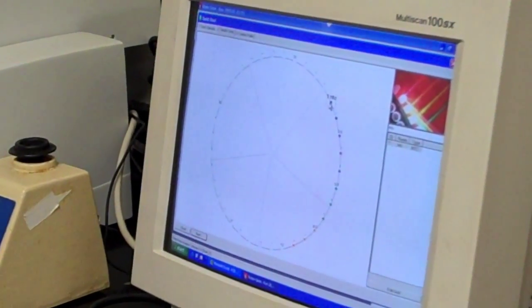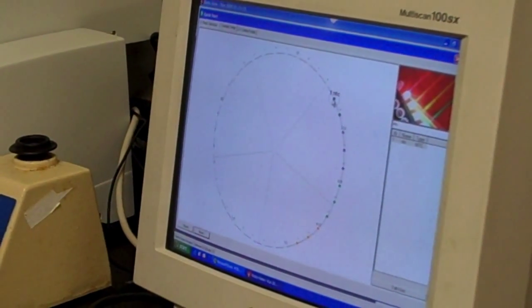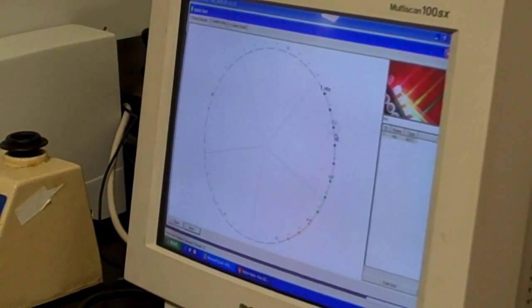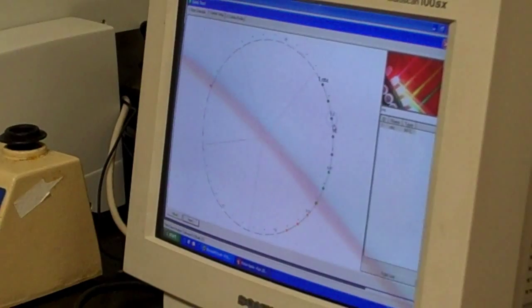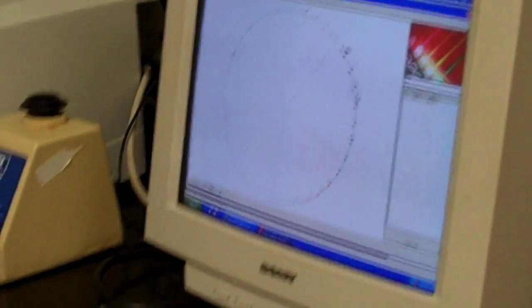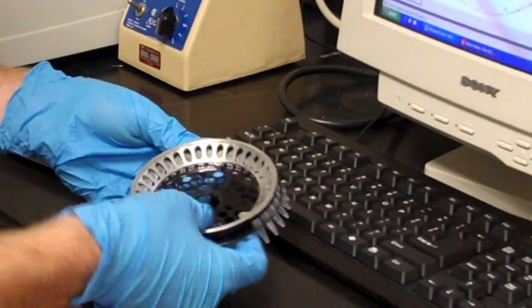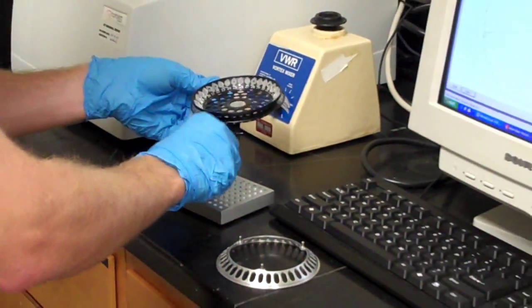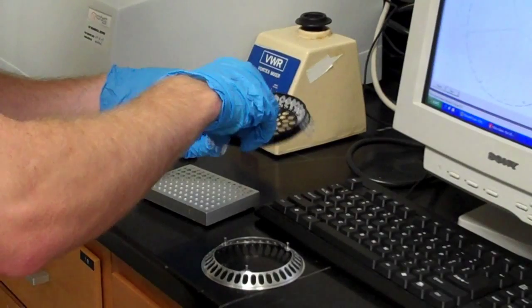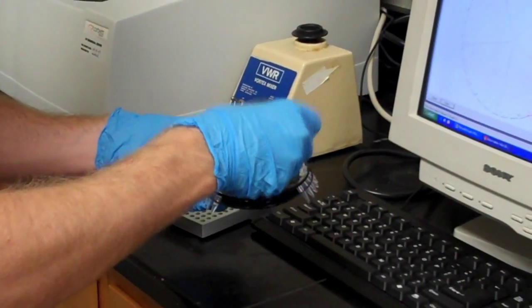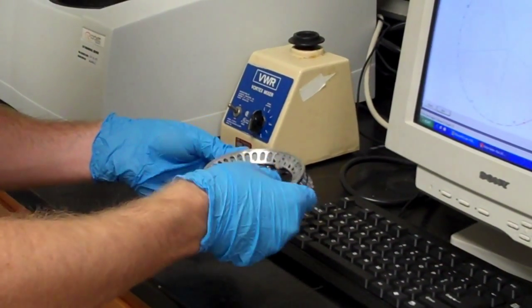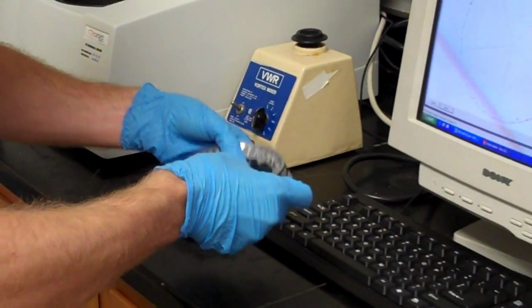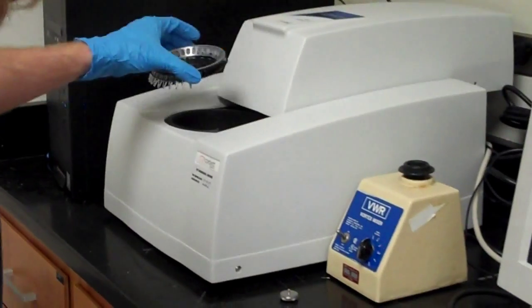Now, you also need negative controls if you're running a real-time PCR, so make sure you load those as well. Put your MCT in the rotor. Put the rotor in the PCR machine.